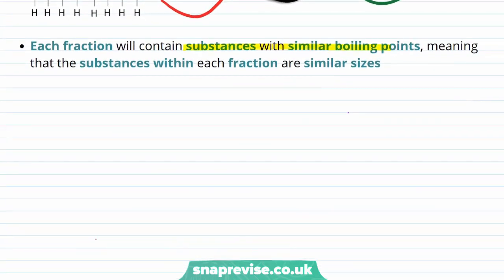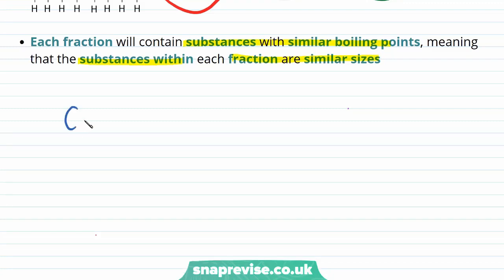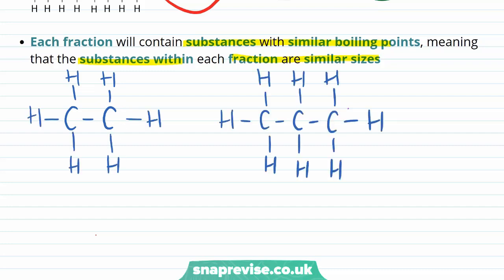Each fraction contains substances that have similar boiling points to each other. As seen in our video on crude oil, the boiling point of an alkane is dependent on the length of its carbon chain, with alkanes with longer carbon chains having higher boiling points than alkanes with shorter carbon chains. Because fractional distillation separates substances by boiling point, the substances within each fraction will also be similar sized to each other. For example, one fraction might contain ethane and propane — ethane being an alkane with two carbon atoms and propane with three — both contained in one fraction because they are a similar size and therefore have similar intermolecular forces and a similar boiling point.